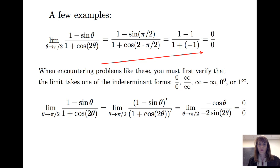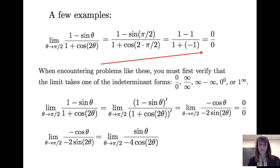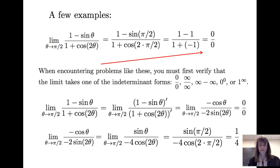So we apply L'Hôpital's rule again. The limit of (−cos θ)/(−2 sin 2θ) as θ goes to π/2 — we take the derivative of the numerator divided by the derivative of the denominator, and we get the limit as θ goes to π/2 of sin θ divided by negative 4 times cos(2θ). Now, looking at the numerator and denominator for values of θ close to π/2, we get 1 divided by 4. So the limit as θ goes to π/2 of (1 minus sin θ)/(1 plus cos 2θ) is 1/4.